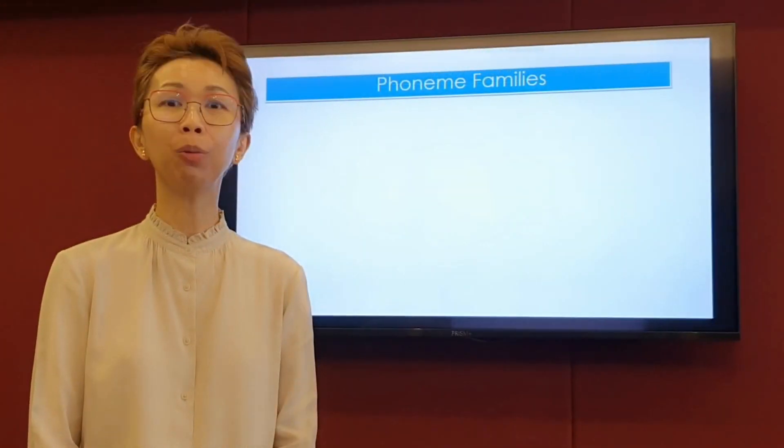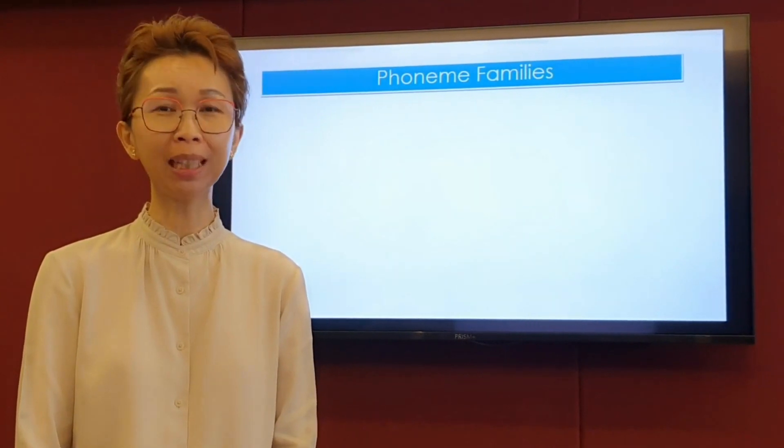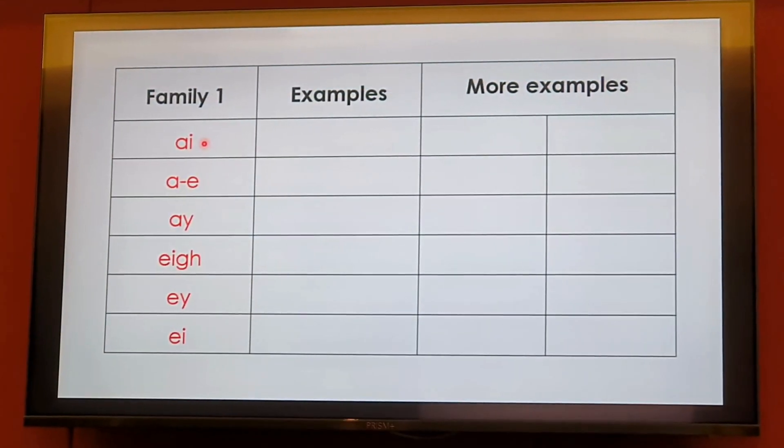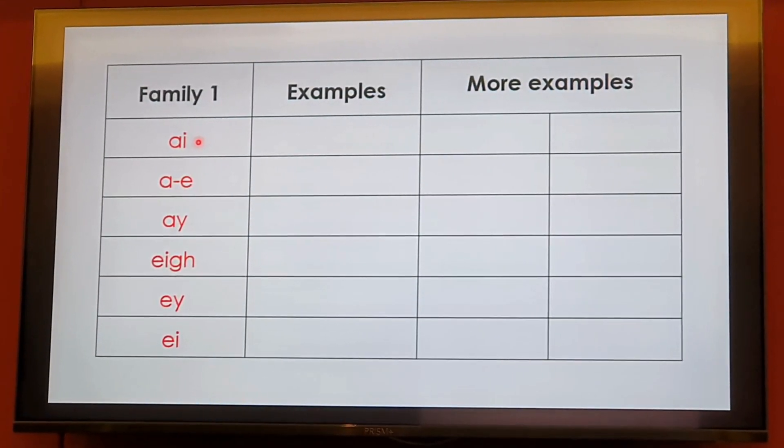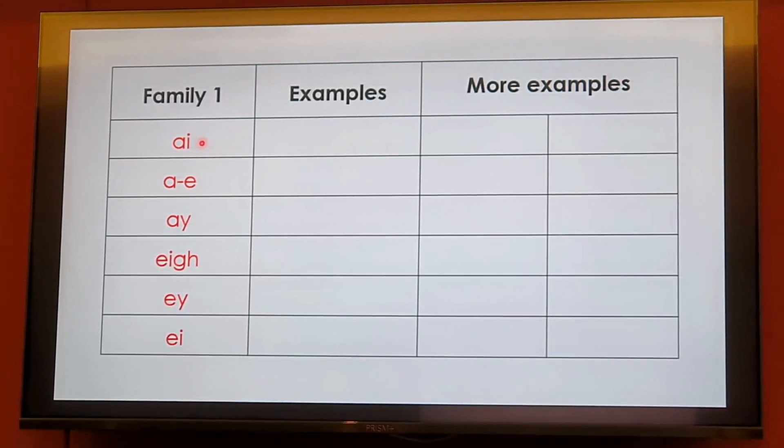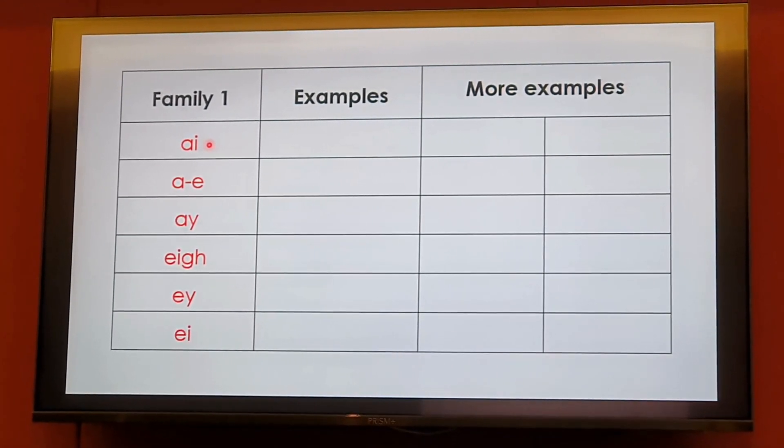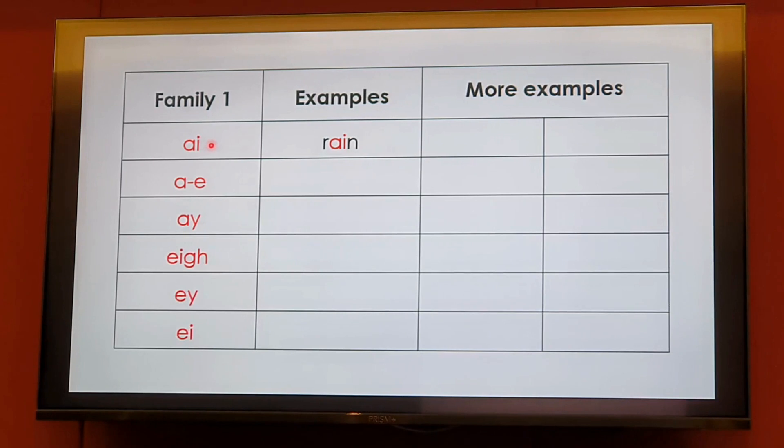In this video, we are going to look at the A family. Are you ready? Let's look at the first phonogram, A-I, A, as in rain. Can you think of more examples? Pain, grain.